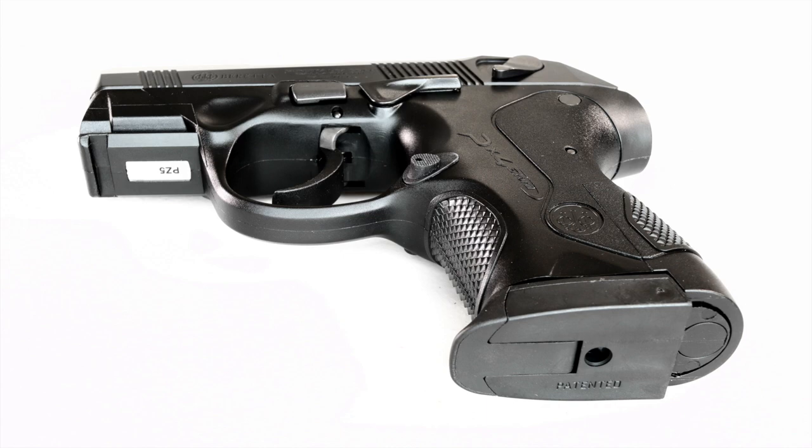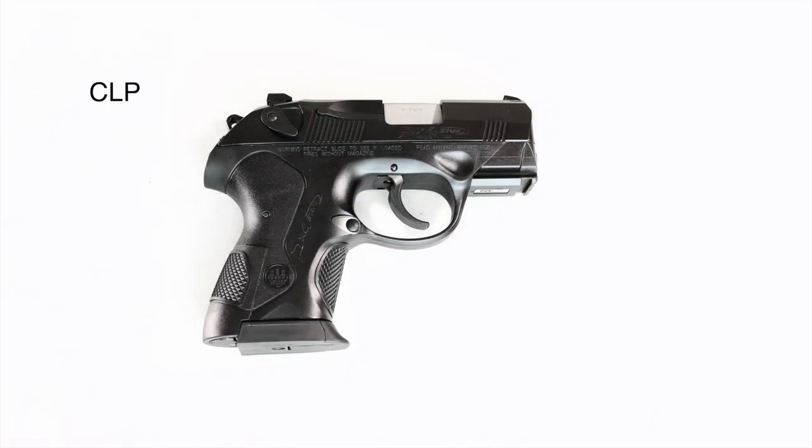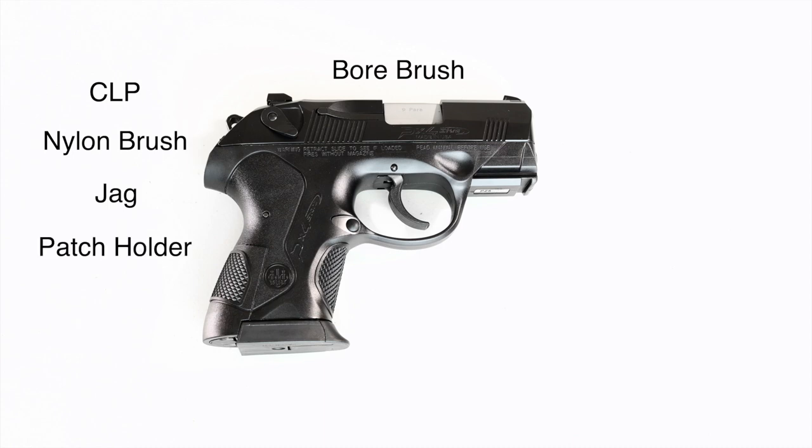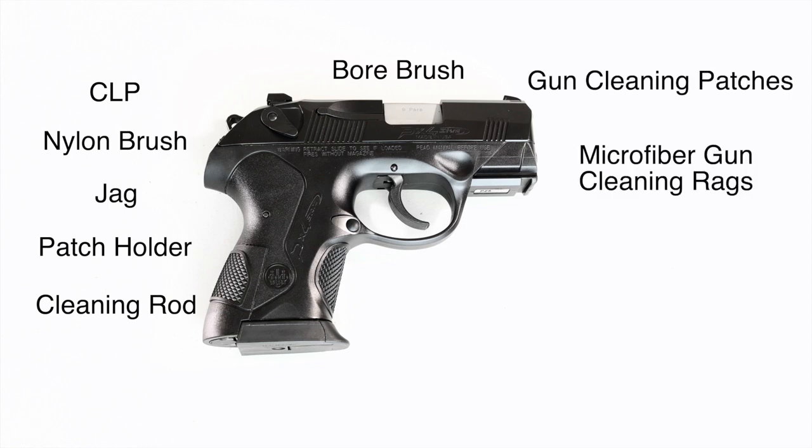To get started, you'll need a few things. CLP, which stands for Clean, Lubricant, and Protectant. A nylon brush, preferably one that's specific for gun cleaning. A 9mm size bore brush—you can use bronze or nylon. A 9mm size jag. You can also use a patch holder instead of the jag, but I get better results with the jag. Cleaning rod, cleaning patches, microfiber rags, and a bore snake. The bore snake is optional, but I highly recommend one. I'll show you why later.